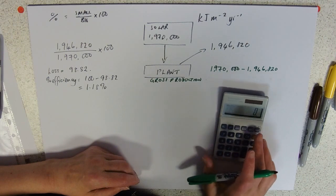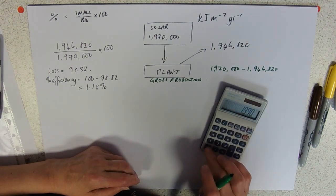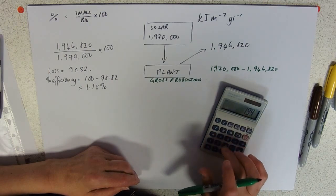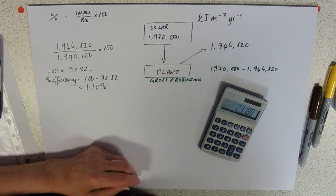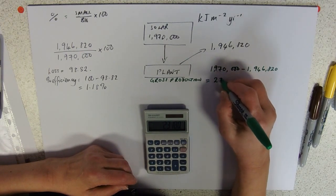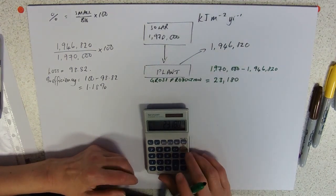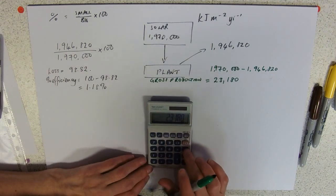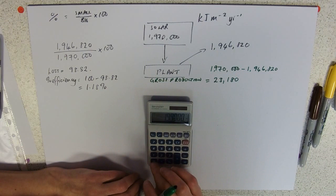Gross production: twenty-three thousand one hundred and eighty. Presumably if we did that as a percentage from the solar radiation, we get this. So divided by 1,970,123, times a hundred.